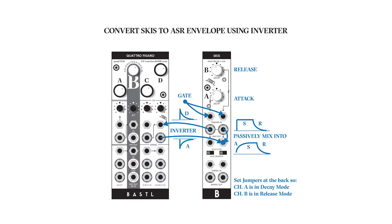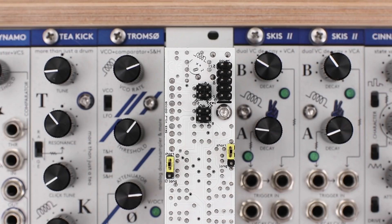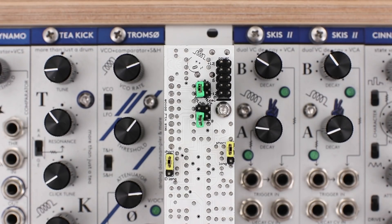Schizzes has two envelopes and can be configured into an ASR envelope by inverting one release envelope and mixing it to the other in a multiple. For the ASR mode you have to set the first envelope jumper to release and the second to decay. I will use this ASR envelope to modulate the volume of my drum sound with Schizzes' built-in VCA.